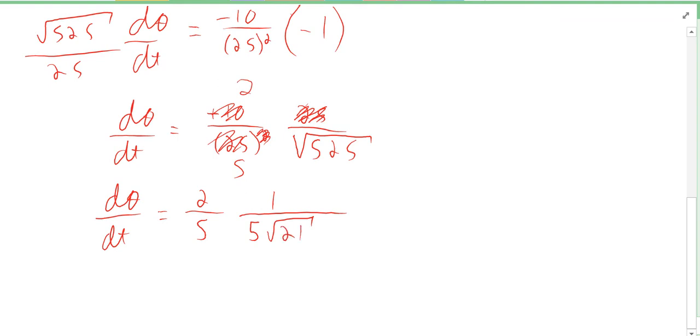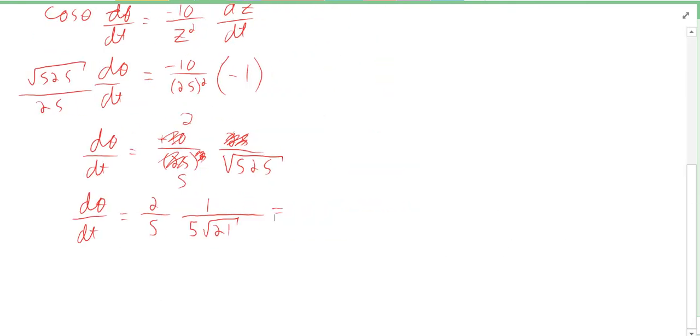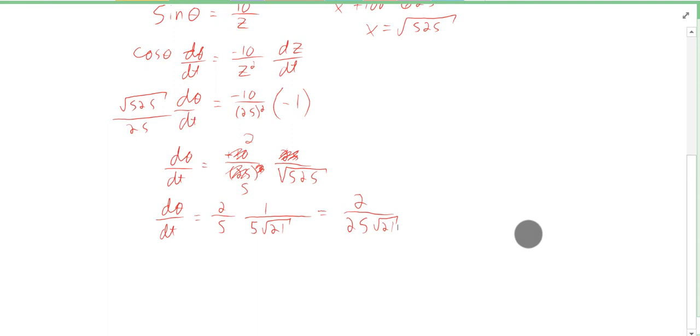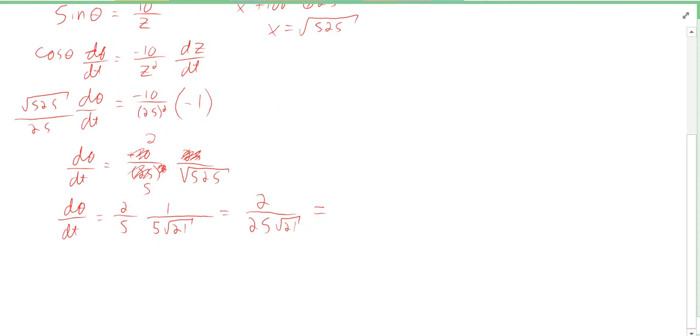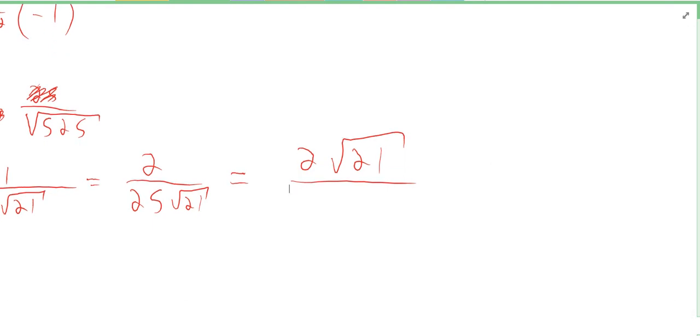That means we're going to get 2 over 25 root 21, which if we rationalize that, we're going to get 2 root 21—I don't really care to be honest. You should know how to do it, I guess. And then we get 25 times 21 down there, and that was 525.